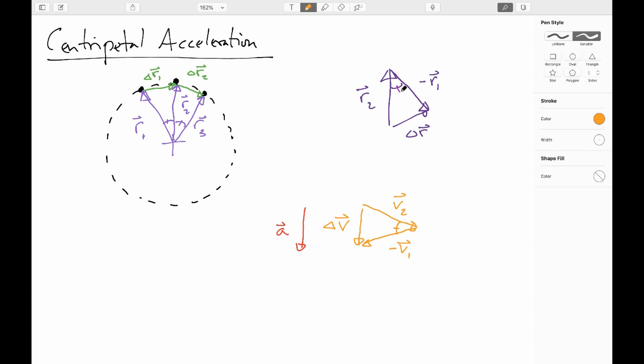So now we can start to relate these things. We can say, for instance, that delta R2 would be equal to V2 times delta T. And similarly, delta R would be equal to V1 delta T. And similarly here, we can say that my delta V would be equal to A delta T. And these are the definitions of velocity and acceleration.